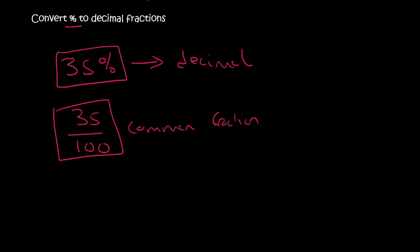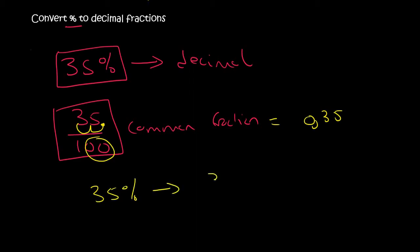In the previous lesson we taught you how to go from a common fraction to a decimal. We've got two zeros, so the decimal is over there. You just move it twice, and so you end up with comma 35, and then you just put a zero in the front. So we went from 35% to a common fraction of 35 over 100, then to a decimal of 0,35.